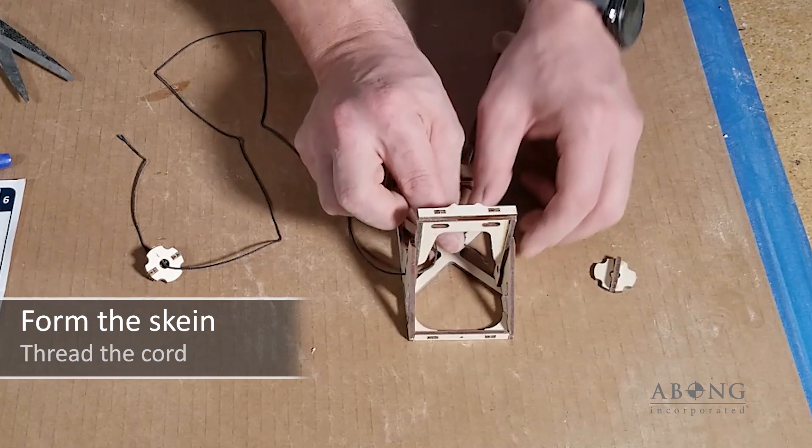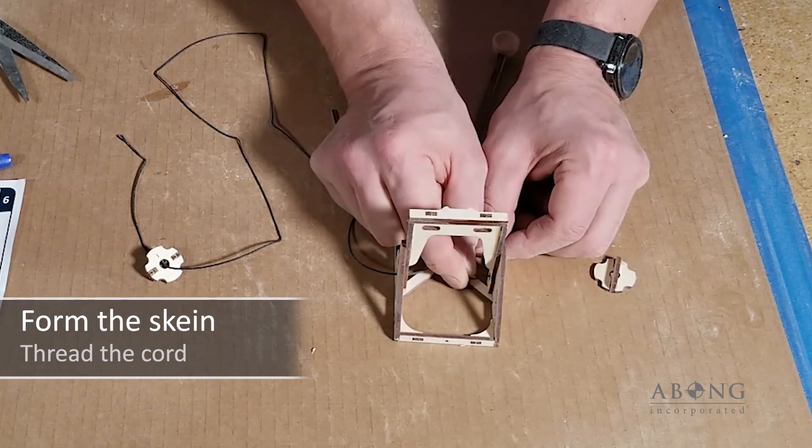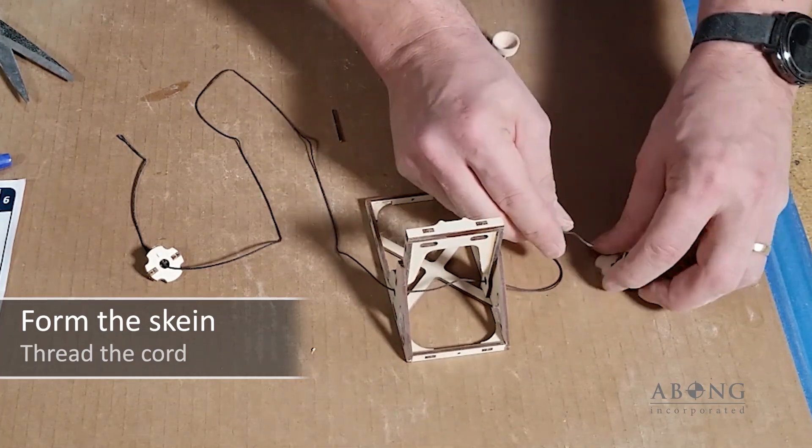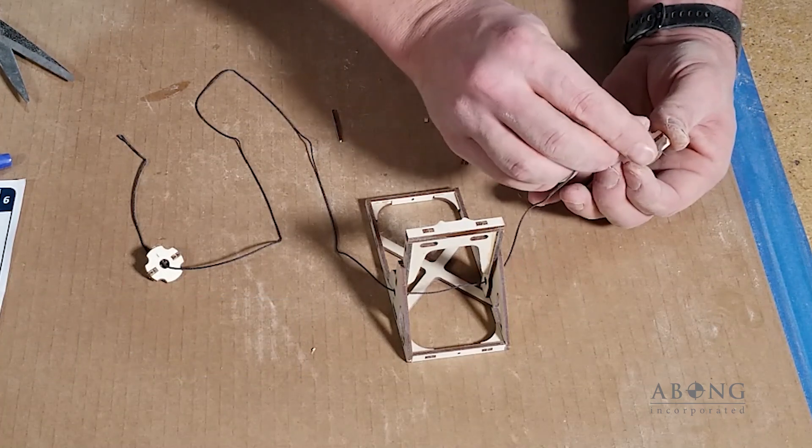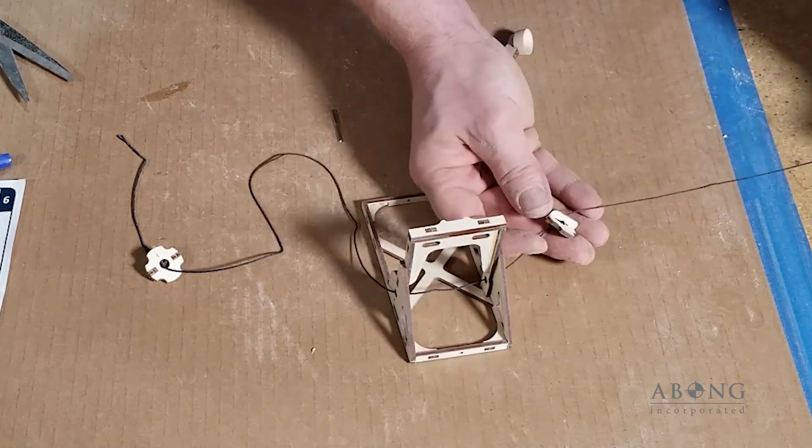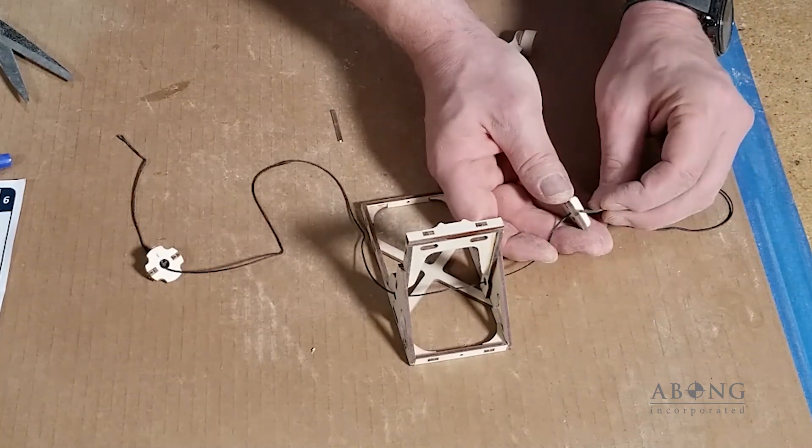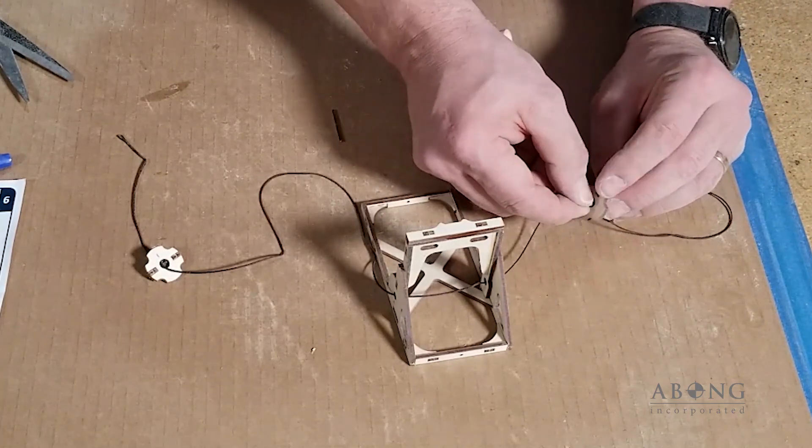And then we're going to thread it through the bottom of the winder plate on the opposite side, over the bar of the winder plate, like that. All right.